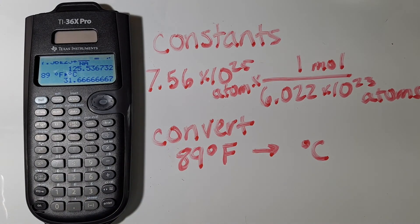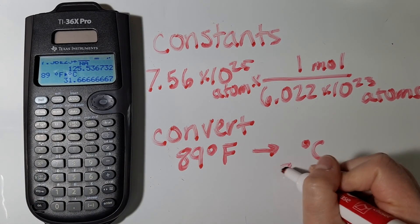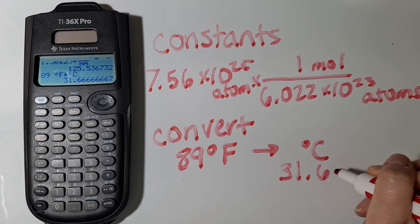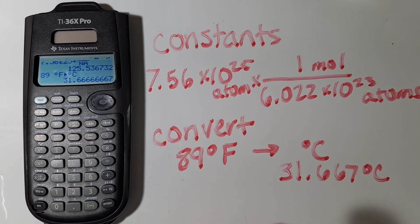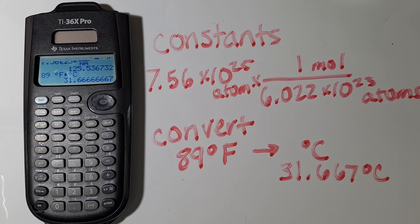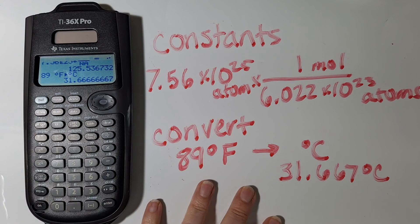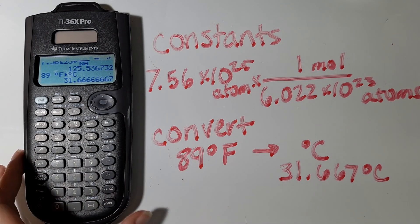So now I know that my degrees Celsius should be 31.667 degrees Celsius, and then I'd have to go through my real calculation where I've shown my work to figure out the appropriate significant figures and how to report that.